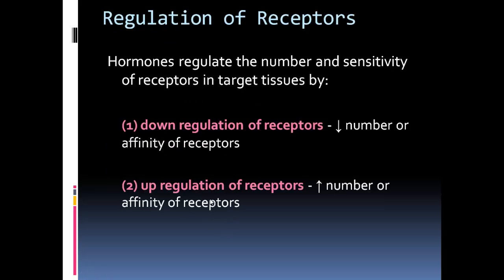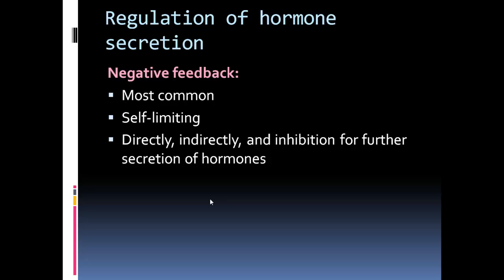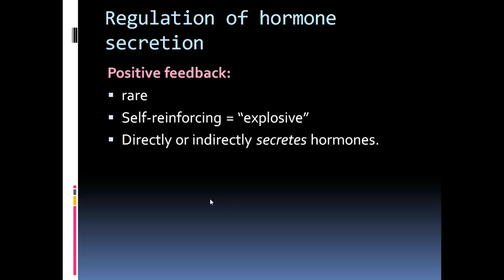Regulation of receptors: hormones regulate the number and sensitivity of receptors in target tissue by down-regulation, which is the decreased number or affinity of receptors, and up-regulation, which is the increased number or affinity of receptors. Regarding regulation of hormone secretion, negative feedback is the most common mechanism — it is self-limiting and directly or indirectly inhibits further secretion. If there are excess hormones, the increase will lead to down-regulation. Positive feedback is very rare; it is self-reinforcing and directly or indirectly causes secretion of hormones.